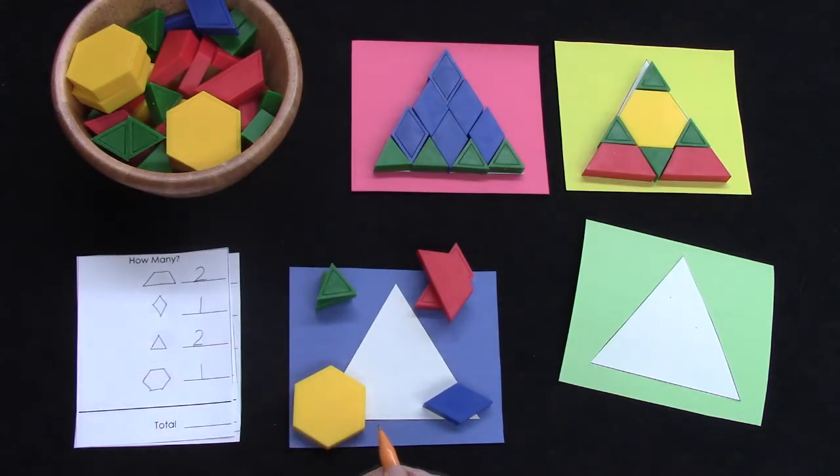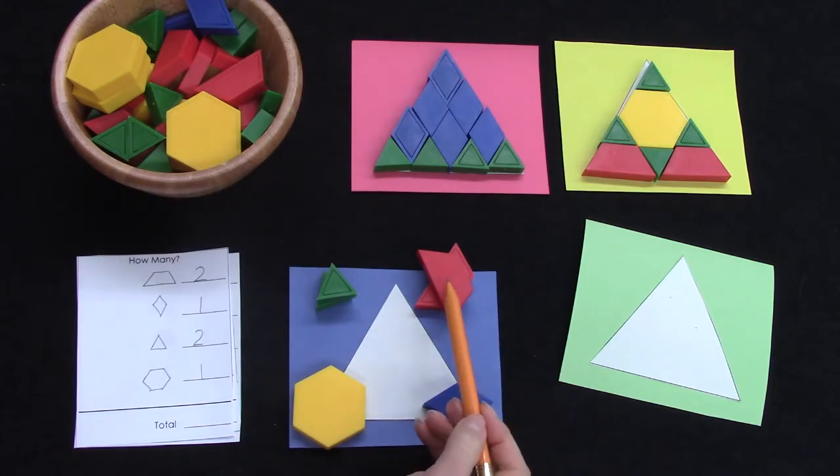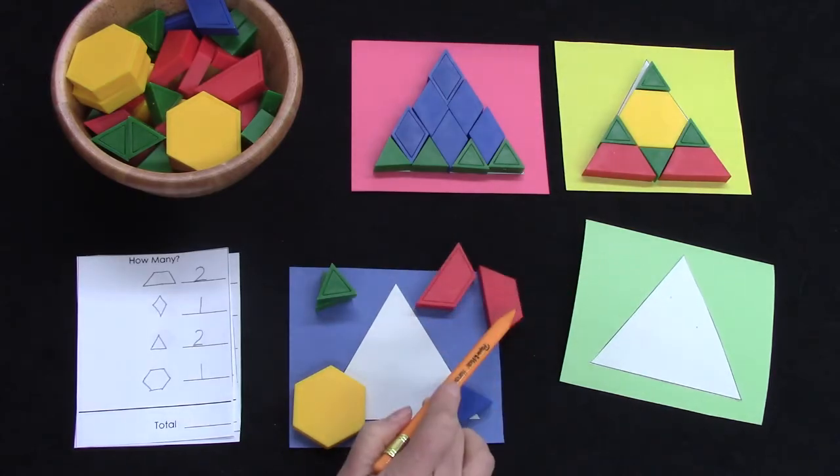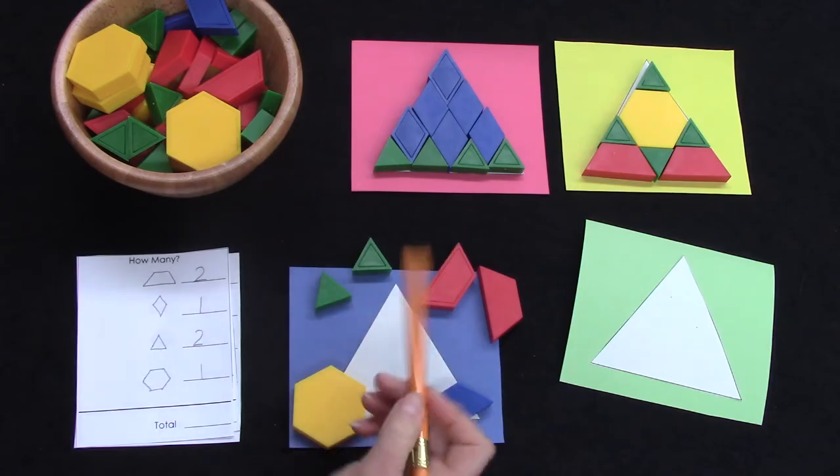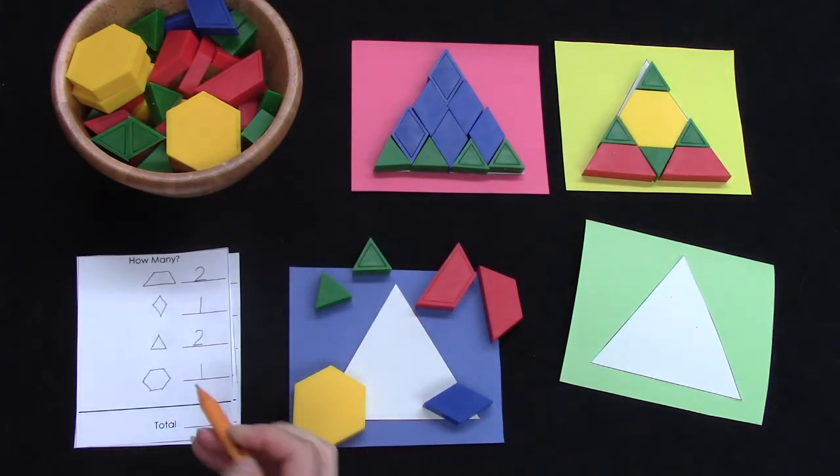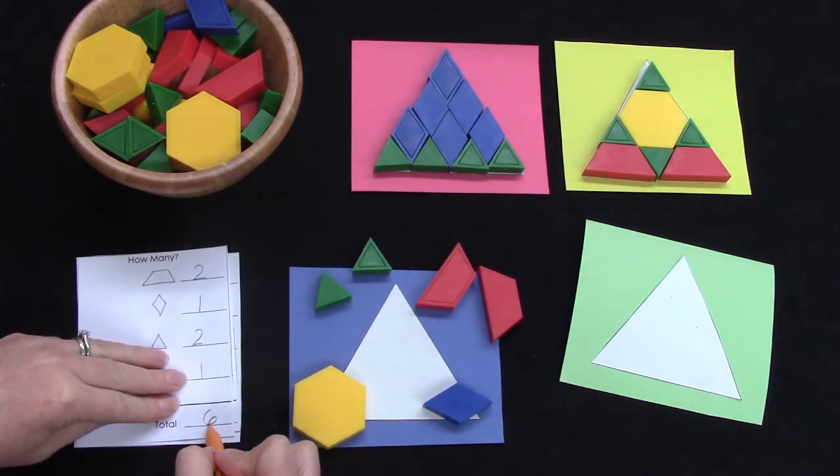Well, let's add these all together. I have two. One, two, three, four, five, six. I have six shapes.